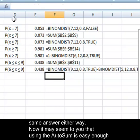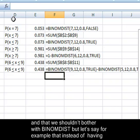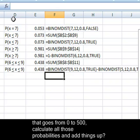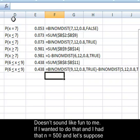Now, it may seem to you that using the autosum is easy enough and that we shouldn't bother with BINOMDIST. But let's say, for example, instead of having twelve jurors, we were mailing out 500 packages via UPS. Do you really want to make the chart that goes from zero up to 500, make all those probabilities and have to add things up? Doesn't sound like fun to me.